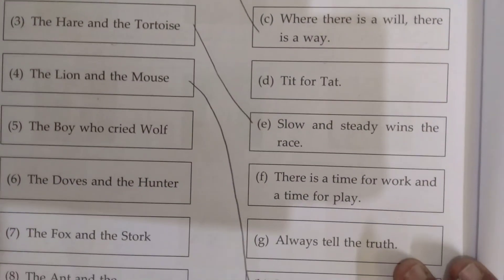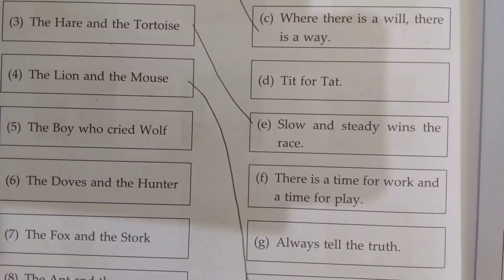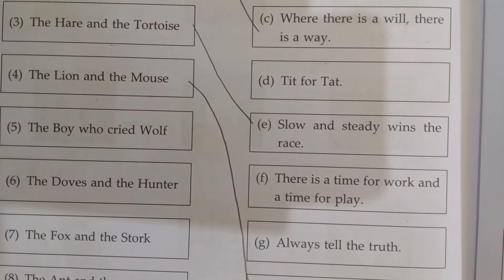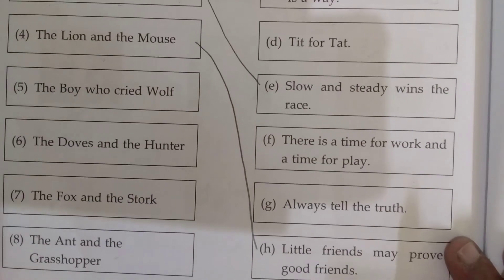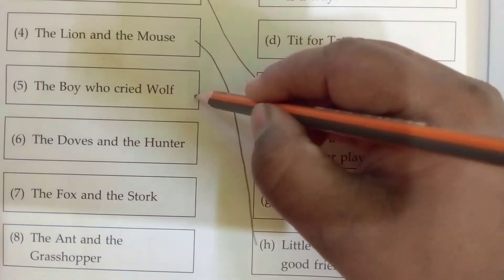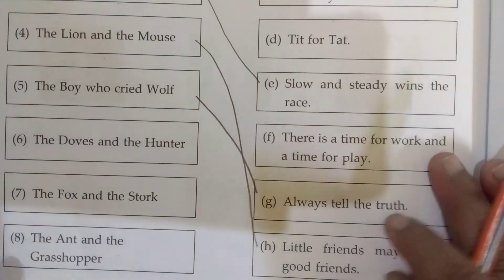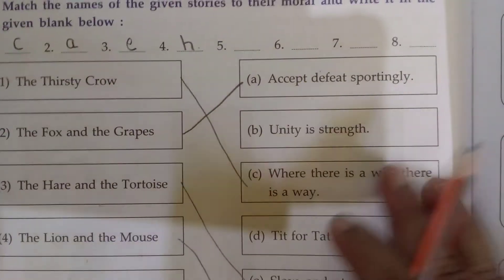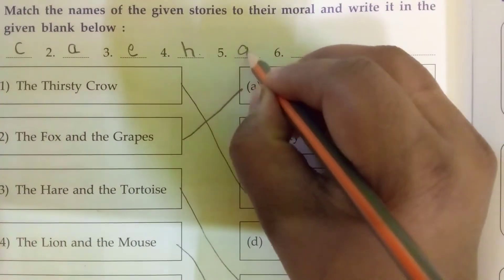Fifth, The Boy Who Cried Wolf — the moral is 'Always tell the truth.' Here we will write G.